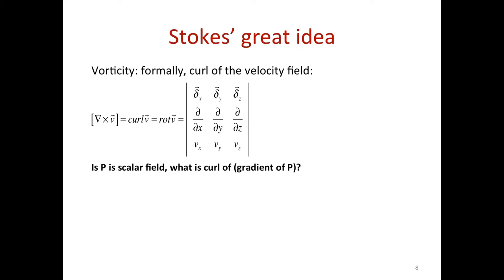Vorticity measures the local tendency — when moving with the fluid — to rotate. Now, if p is a scalar field and I look at the curl of the gradient of p: I replace v-x, v-y, v-z with partial p over partial x, partial p over partial y, partial p over partial z, and evaluate. Using the fact that partial derivatives commute for sufficiently smooth functions, the result is zero. Curl of a gradient is always zero.